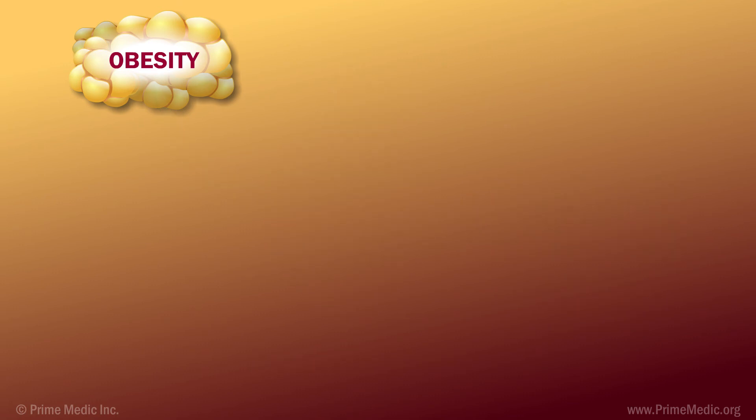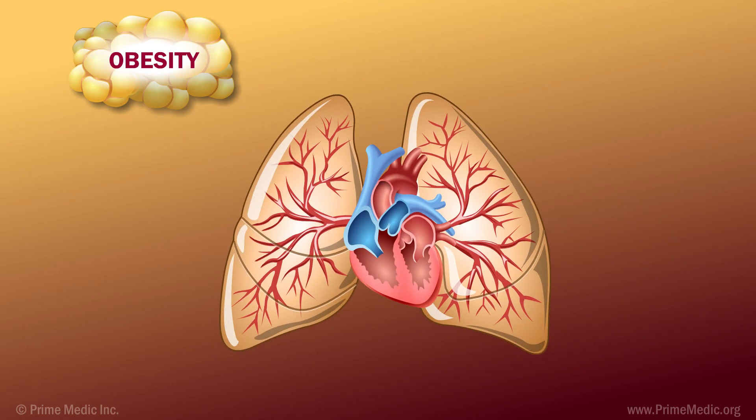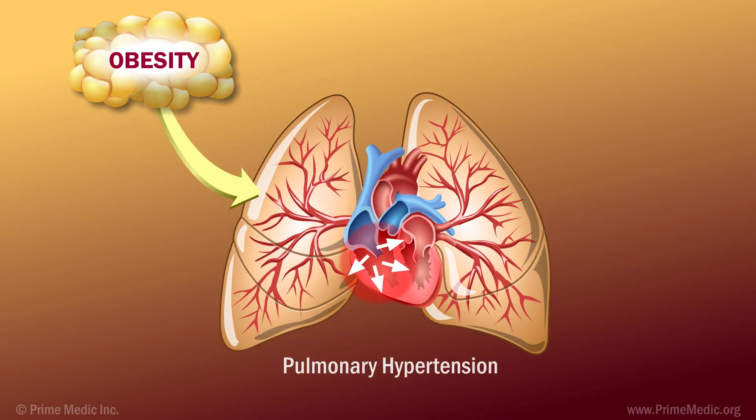Obesity increases the risk of developing pulmonary hypertension. This is thought to be related in part to an increase in right ventricular filling pressures and an increased load on the pulmonary vascular system.